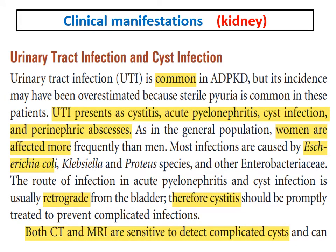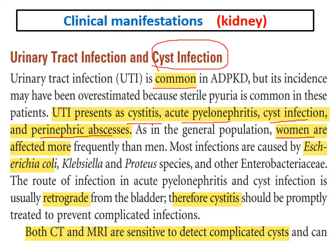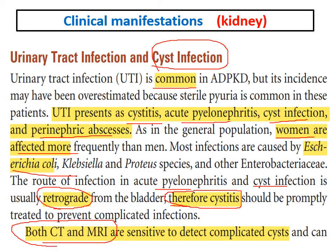Cyst infection is common. UTI may present as cystitis, acute pyelonephritis, cyst infection, or perinephric abscess. As in the general population, women are more affected than males. The most common organism is E. coli, and the route of infection is retrograde from the bladder. Each episode of cystitis should be treated adequately. CT and MRI are very sensitive for detecting complicated cysts, including infected or hemorrhagic cysts.